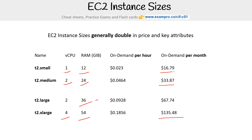A lot of times you always have the option to say, do I want to go to the next instance size up, or have an additional instance of the same size? Sometimes it's a better approach to get an additional instance, because then you can distribute it across another availability zone, and you also meet additional capacity.